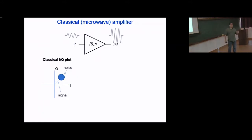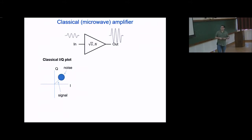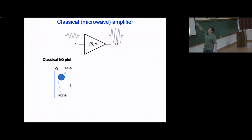Let's talk about a classical microwave amplifier — though this could equally be optical or audio. This amplifier is designed so that an incoming wave at the input port is absorbed into the amplifier and not reflected. Out the output port comes an amplified copy of the signal. This is all perfectly classical, and we describe the amplifier by some gain — often power gain, and in voltage units this is root-G — plus some added noise N.